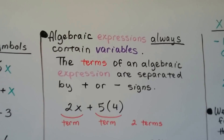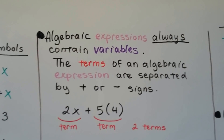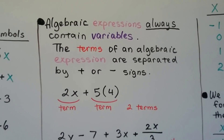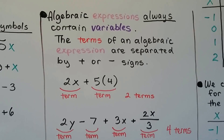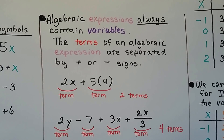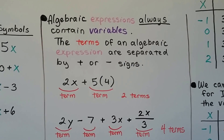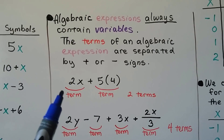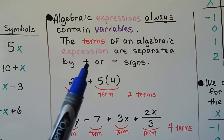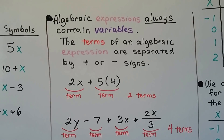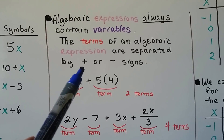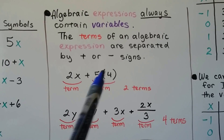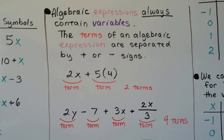Algebraic expressions always contain variables. The terms of an algebraic expression are separated by a plus or minus sign. We're going to reach a point where it says combine like terms or simplify — you need to know what a term is. A term in an algebraic expression is separated only by a plus or minus sign, not division or multiplication. So here we have two terms separated by a plus sign.